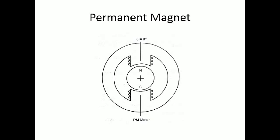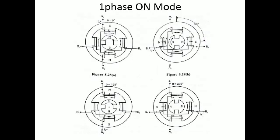Now it rotates step by step. Let us discuss the content one by one. The first mode of operation is single phase ON — it is a full step mode. Assume this machine has four stator poles and only two rotor poles. The rotor poles are fewer than the stator poles.